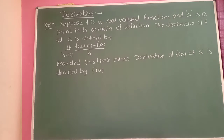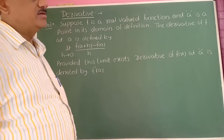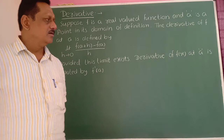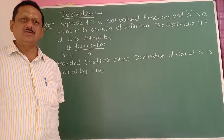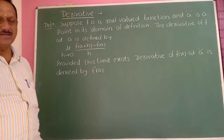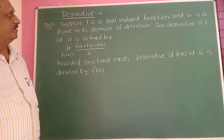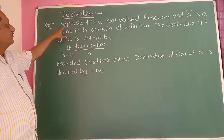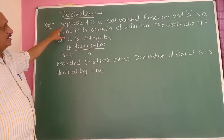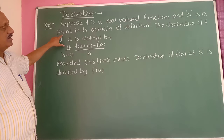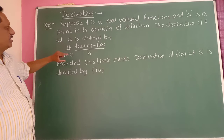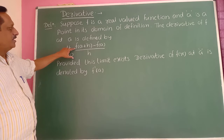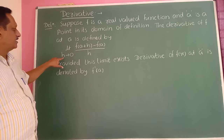Next, the derivative of a function — this is a continual part of limits and a very important topic used in first year, second year, diploma, and engineering. The definition of derivative states: suppose f is a real-valued function and a is a point in its domain. The derivative of f at a is denoted by the limit of f(a+h) minus f(a) divided by h as h tends to 0.